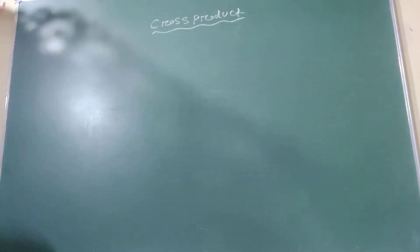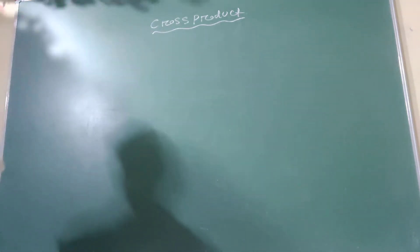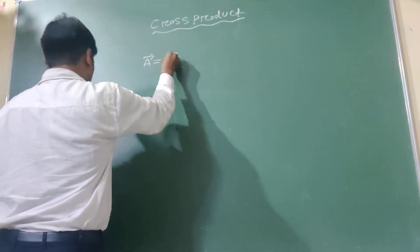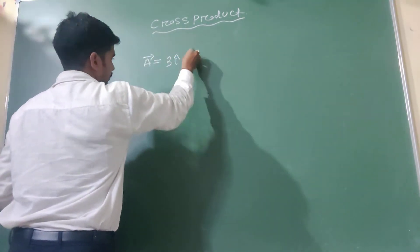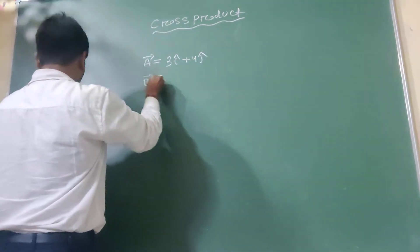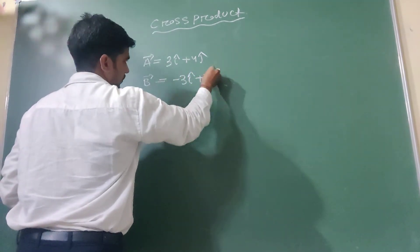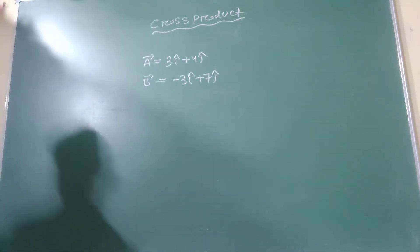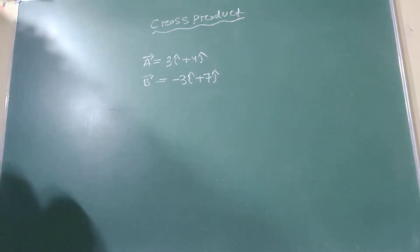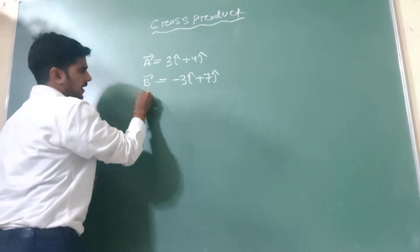Question: If A vector equals 3 I cap plus 4 J cap, and B vector equals minus 3 I cap plus 7 J cap, find the area of the triangle.